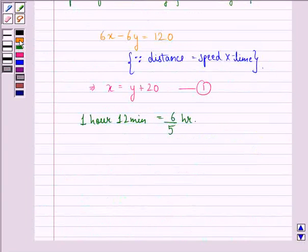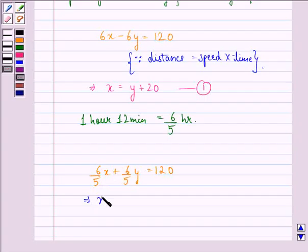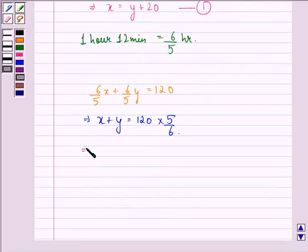Now when they move in opposite directions, it will get added and we will have 6 by 5x plus 6 by 5y is equal to 120. This implies x plus y is equal to 120 into 5 by 6. This implies x plus y is equal to 100.